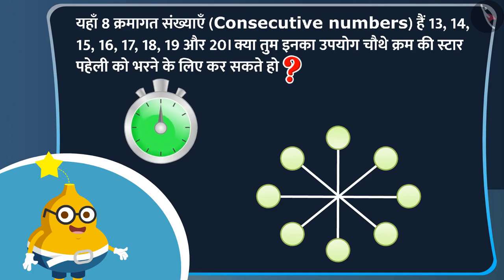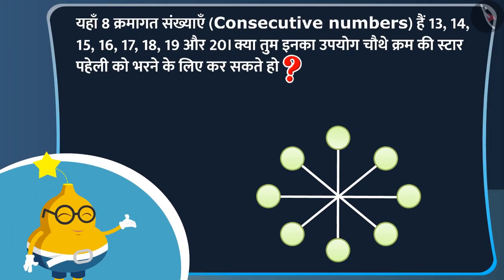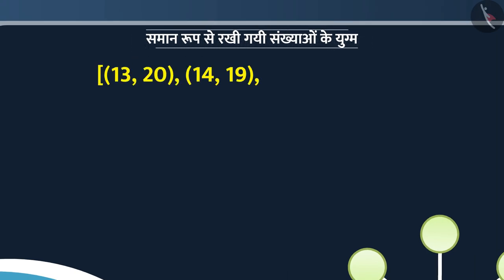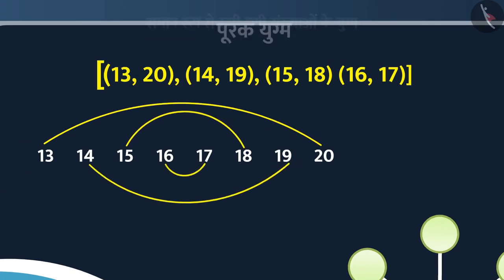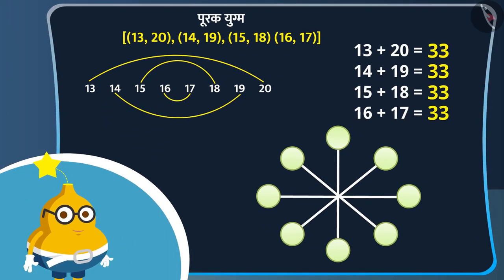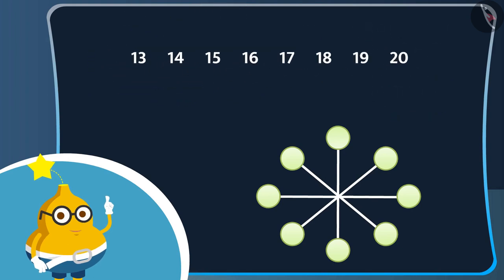चलो, अब देखते हैं की फ्रूटी इस पहेली को कैसे हल करता है। कुछ सोच समझ कर फ्रूटी कहता है: इसके लिए हमें समान रूप से रखी गई संख्याओं के युग्म यानि इक्वली प्लेस्ड नंबर पेयर्स लेने होंगे। यहाँ समान रूप से रखी गई संख्याओं के युग्म या पूरक युग्म हैं। और देखो इनका योग बराबर है। तो इन संख्याओं का उपयोग करके हम इस तरह से स्टार भर सकते हैं।